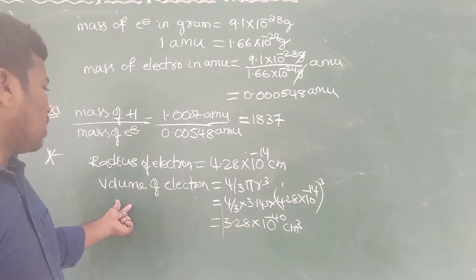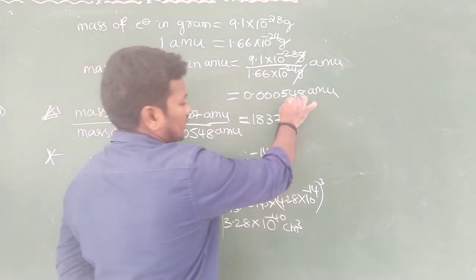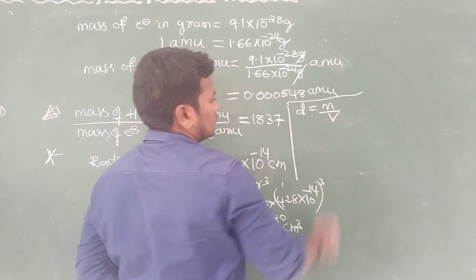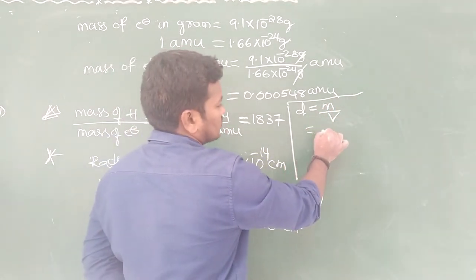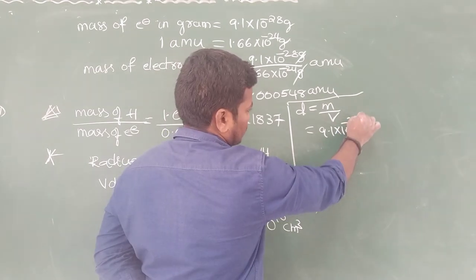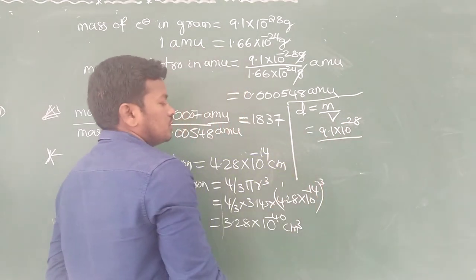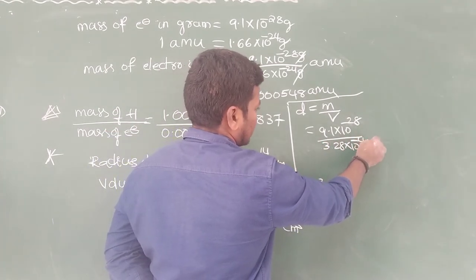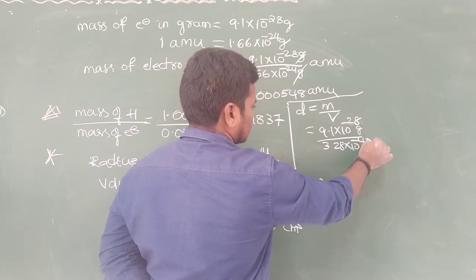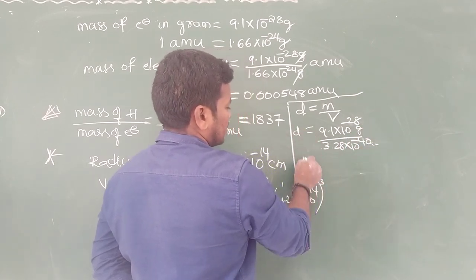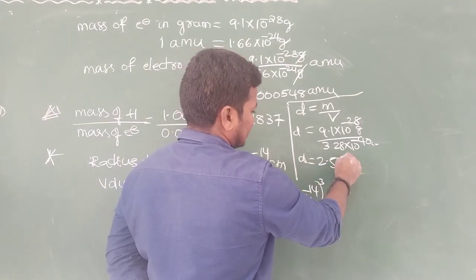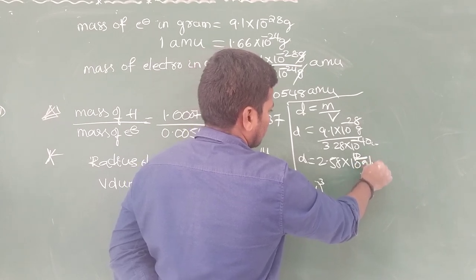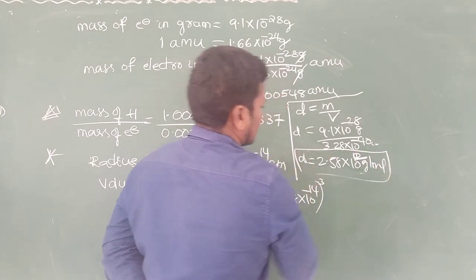Now we have the volume and the radius, so we can calculate the density of the electron. Density equals mass divided by volume. Mass = 9.1 × 10⁻²⁸ grams, volume = 3.28 × 10⁻⁴⁰ cm³. The density comes out to approximately 2.58 × 10¹² grams per millilitre. This is the density of the electron.